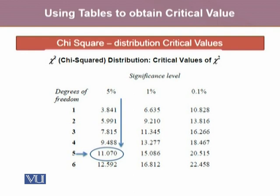Similarly, for the chi-square distribution, if our variable of interest follows the chi-square distribution, we find its critical values using a similar method, since the chi-square distribution also has one parameter: its degrees of freedom. At 5% significance level and 5 degrees of freedom, the critical value turns out to be 11.070.